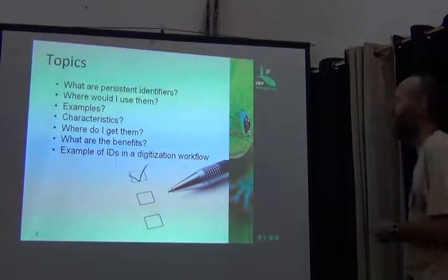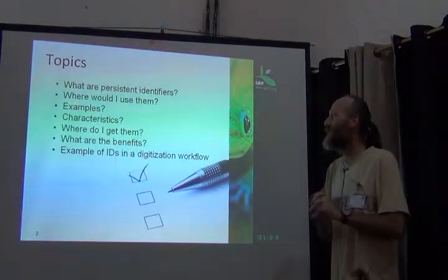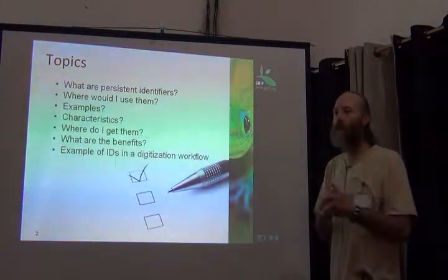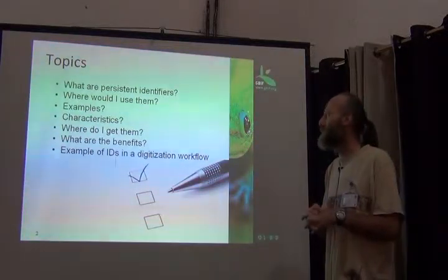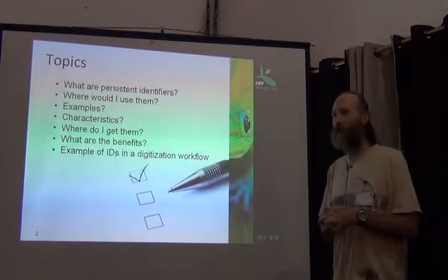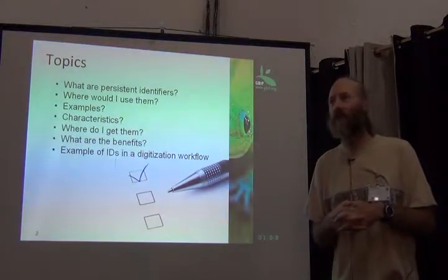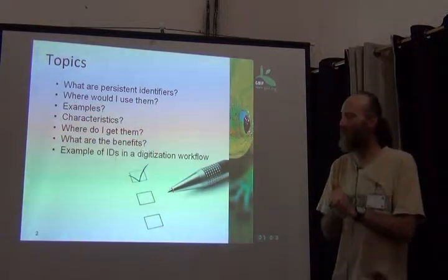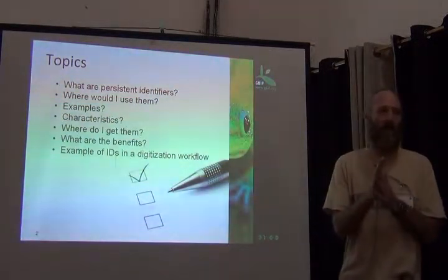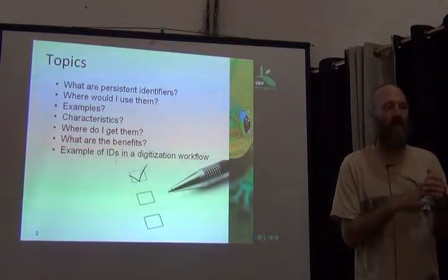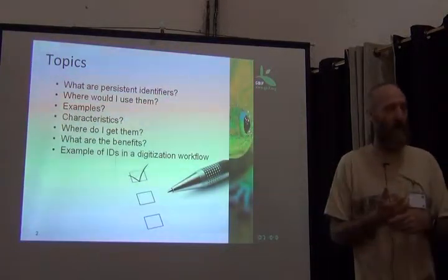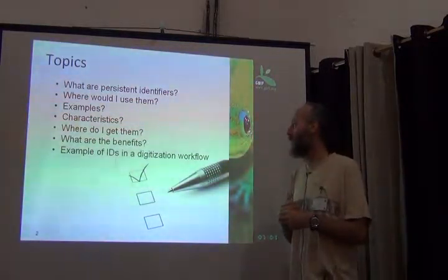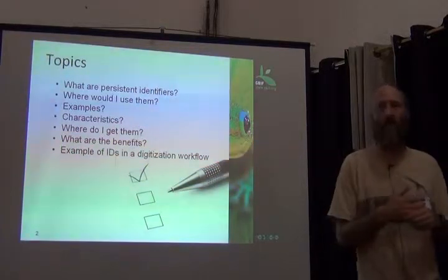The things I will talk about are fairly straightforward: What are persistent identifiers? Where would I use them? Some examples of what they are and their characteristics. And then, if I've convinced you that they're of some use, where do you get them, how do you get them, and what are the benefits — followed by a description of one example of the use of IDs in a digitization workflow.